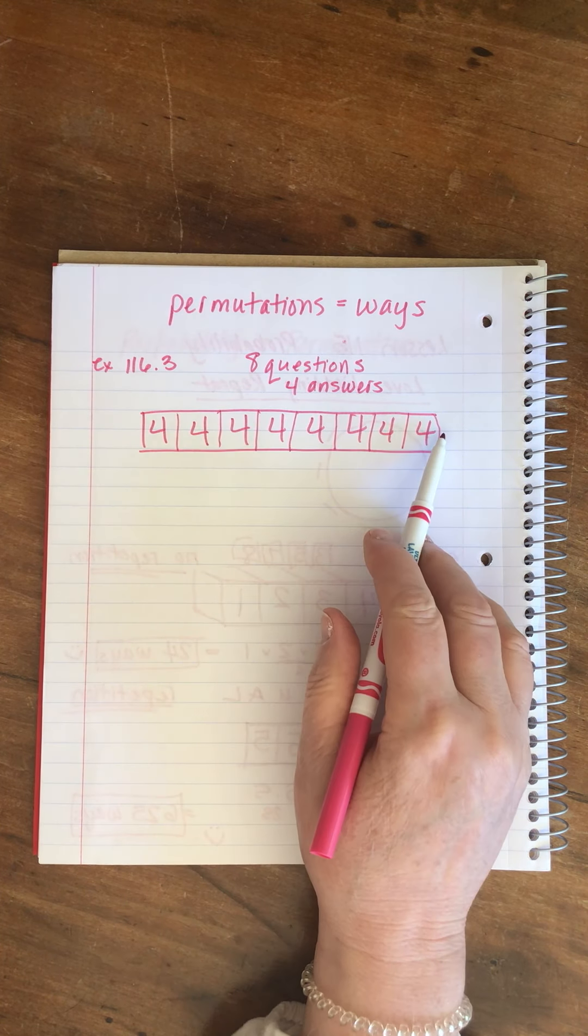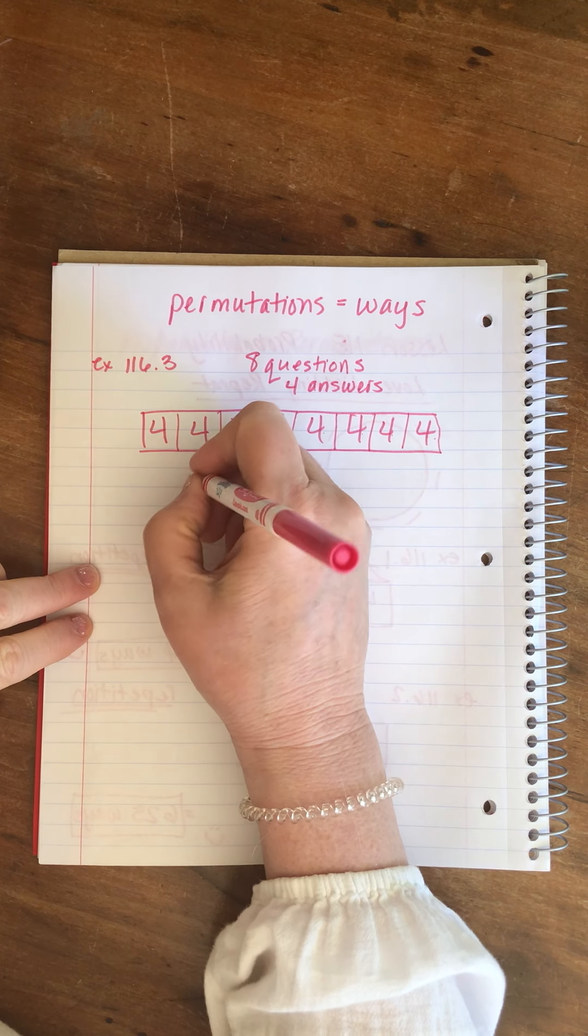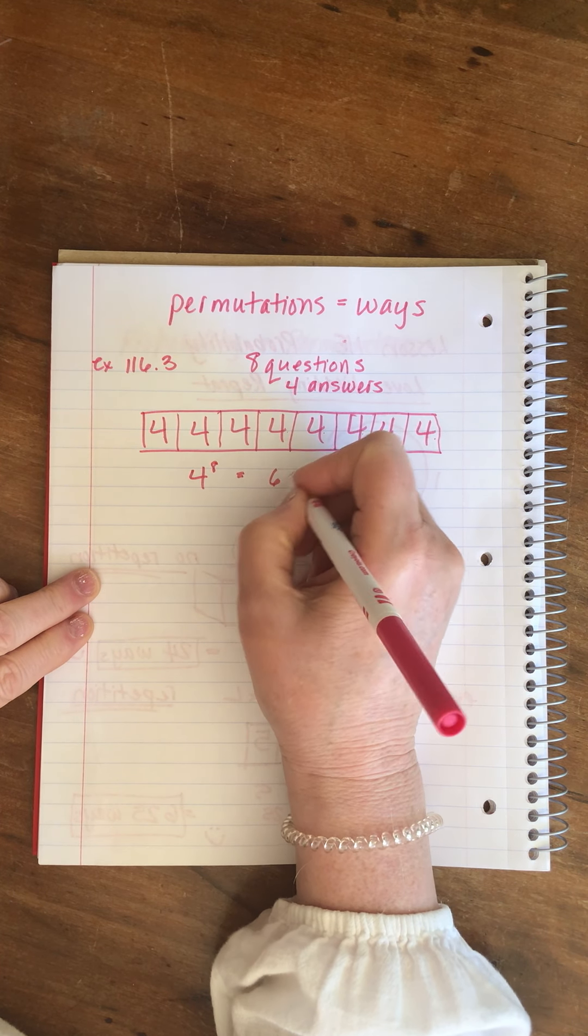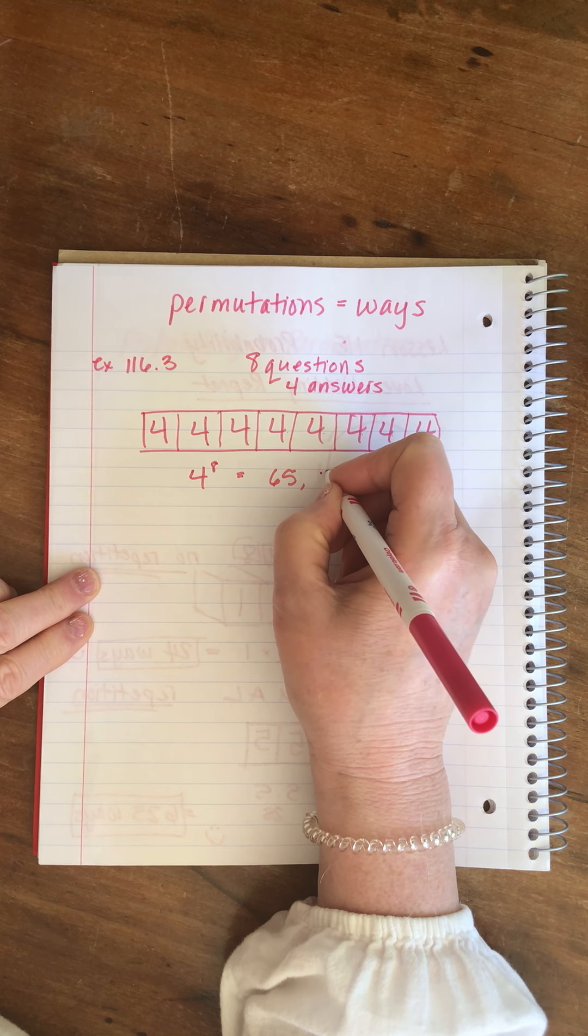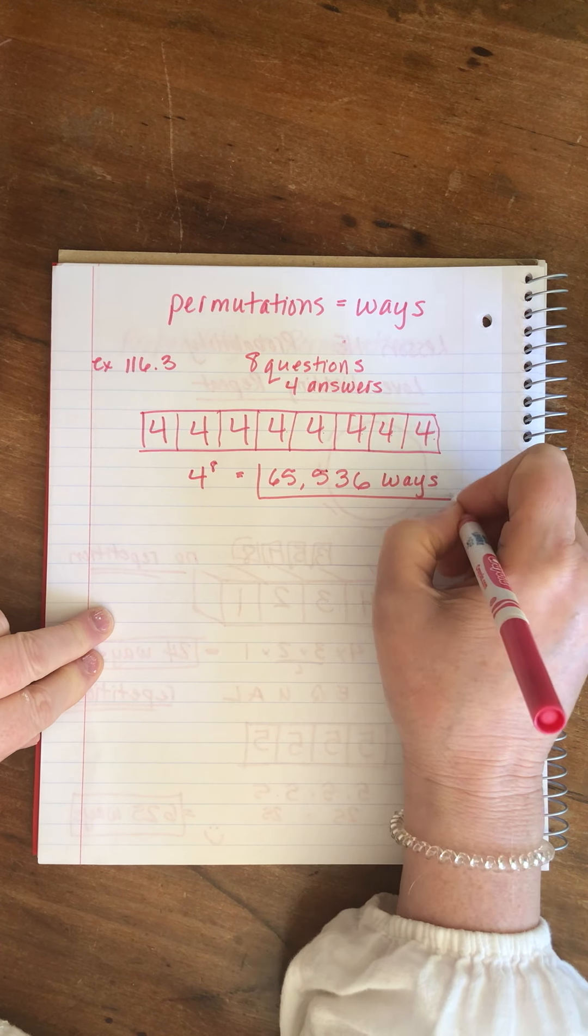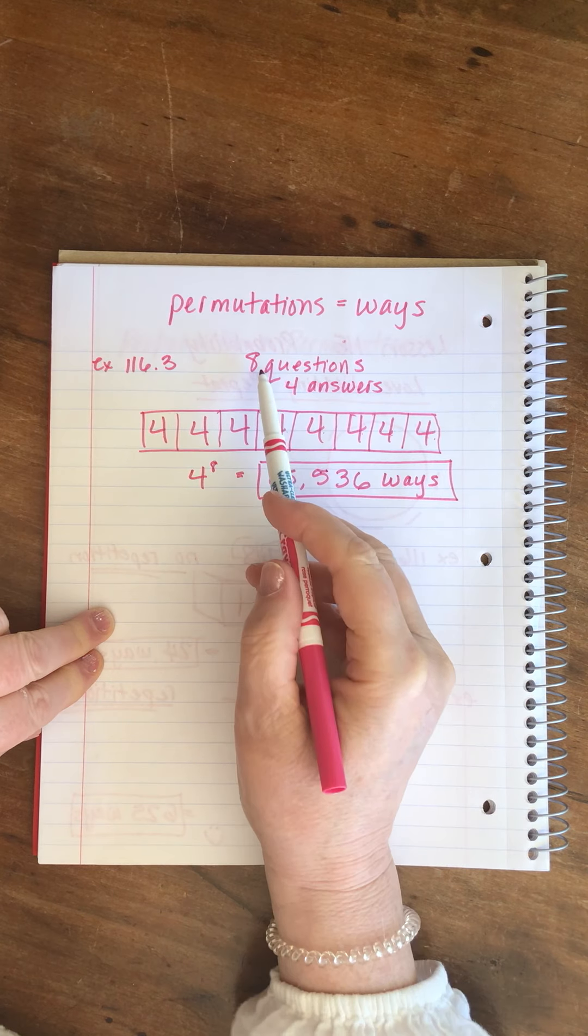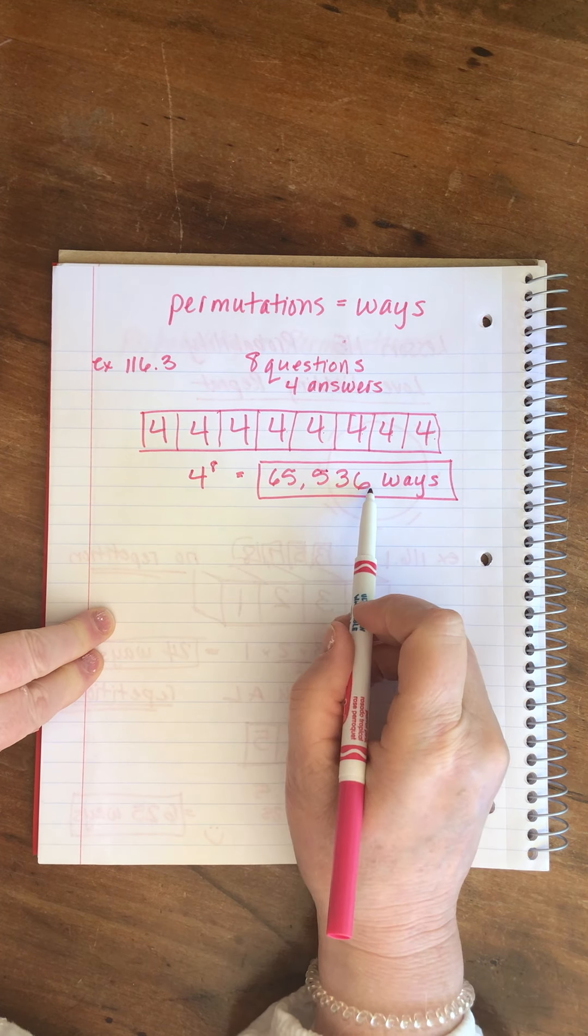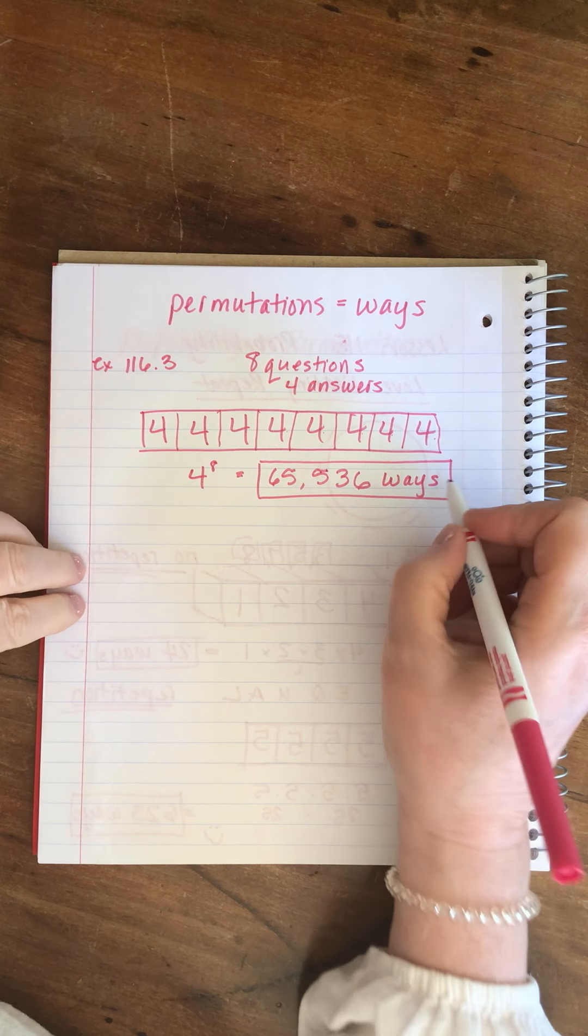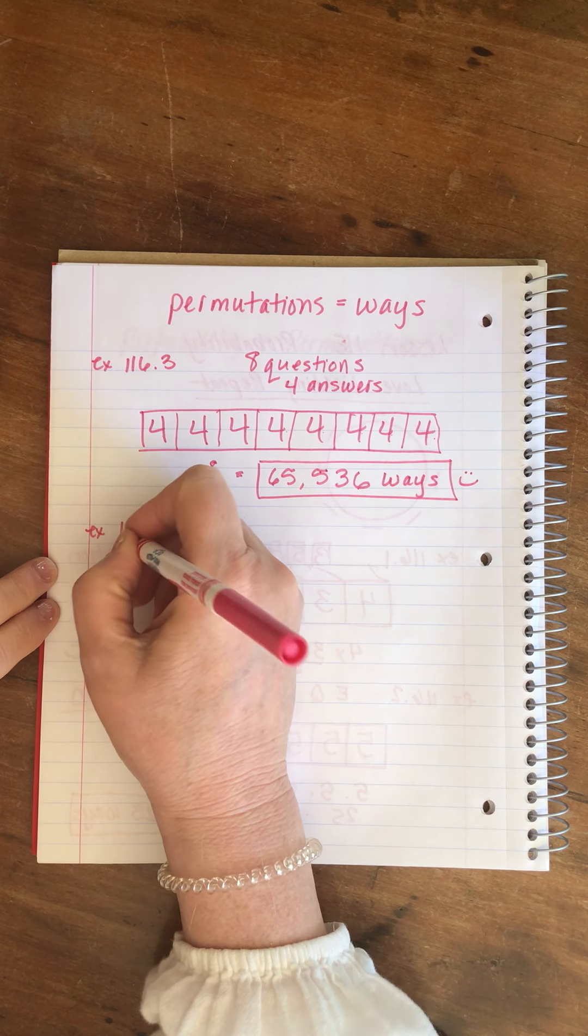When we get to problem one, how many options do we have for answering that question? Four, because there's four answers for each one of the questions. Problem two A, B, C, D, problem three A, B, C, D. You can see we're going to have four options for each of the eight questions on the test. So that means we calculate four to the eighth power, which equals the big number 65,536. This, my friends, is why teachers know when there's cheating. If two students turn in the exact same set of answers, that is cause for concern because it's not very likely that it would happen by accident, even with a small test that only has eight questions. There are so many different ways you could combine them.